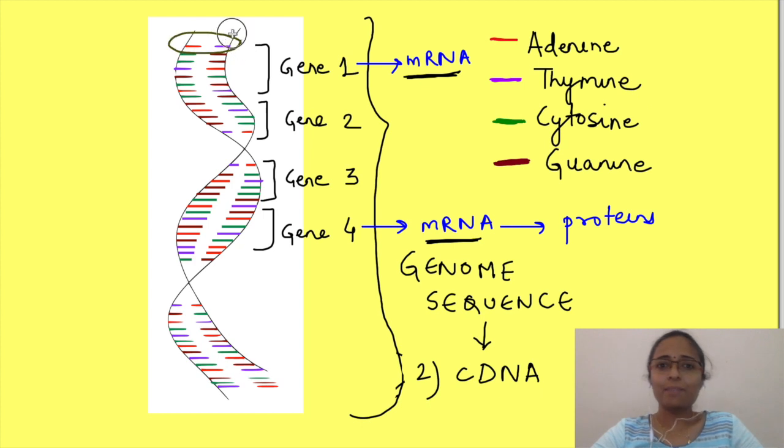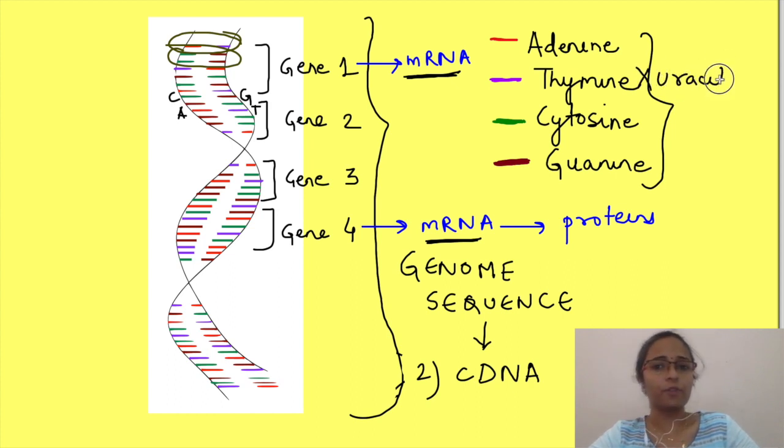This can be done since matching of base pairs in the DNA is very specific. You know there is a nucleotide rule, right? Adenine pairs with thymine and cytosine pairs with guanine. In RNA there is a difference. Adenine pairs with uracil instead of thymine.